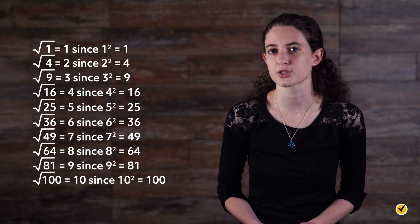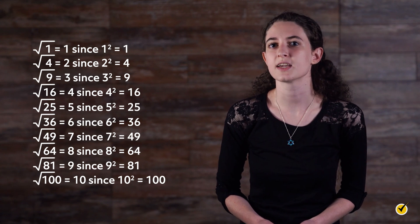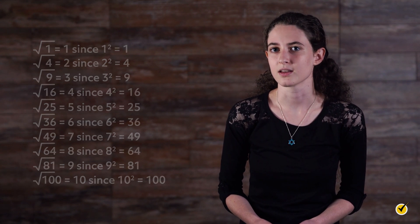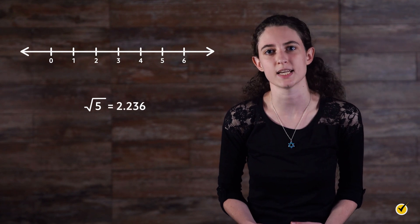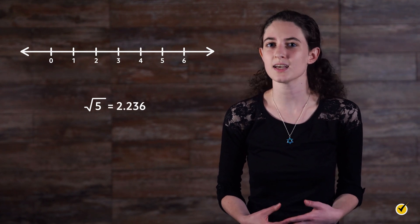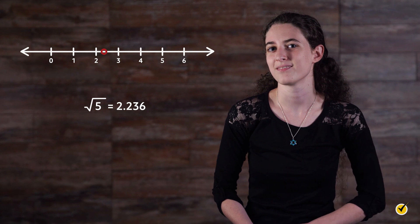Because taking the square root of a perfect square results in an integer, it can be easily found on a number line. But how do we know where the value of the square root of 5 would fall on a number line? Well, the square root of 5 is roughly 2.236, so we can guess that it lands somewhere around here on the number line.